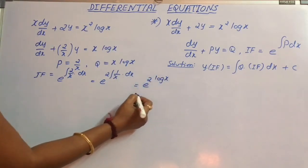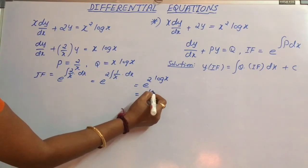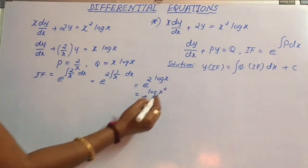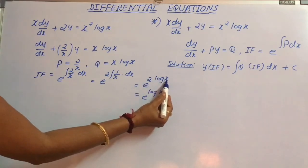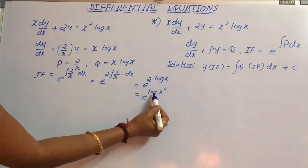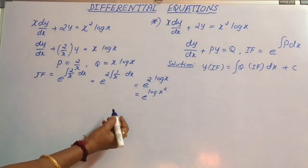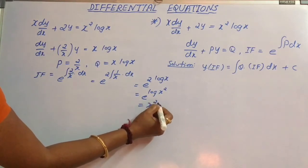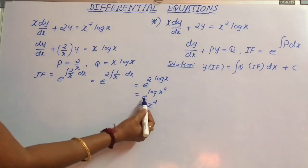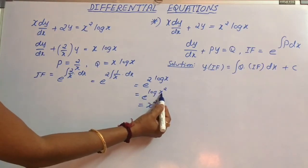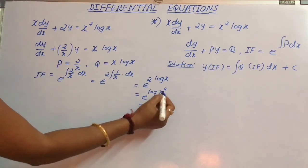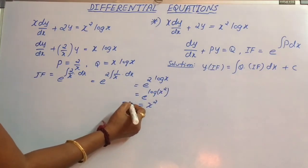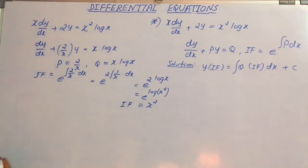Therefore, the integrating factor becomes e to the power of log x², since n log a can be written as log a to the power n. This equals x², because e to the power of log f(x) is f(x) itself. Therefore, the integrating factor is x².